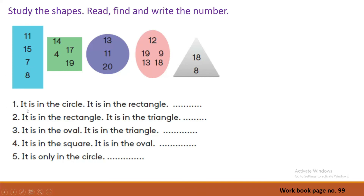Number 1: it is in the circle and it is in the rectangle. You can see both the circle and the rectangle. Circle has 13, 11, 20. Rectangle has 11, 15, 7, 8. It's very easy — find the number you can see in both shapes. The answer is number 11. Now you can write the number on the blank.